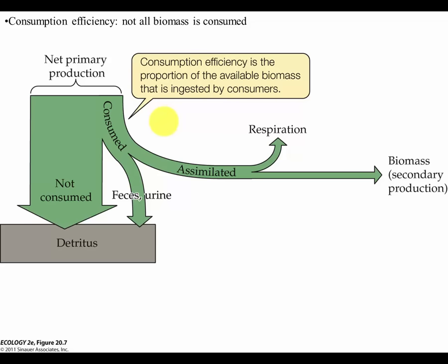Consumption efficiency is very strongly related to the accessibility of biomass. The most striking example is terrestrial plants — when you look at a tree, mostly what you're looking at is wood, and wood is inedible. So even though a tree represents a tremendous amount of biomass costing a huge amount of energy, very little of that energy will ever be passed on to any other organism. Wood that most terrestrial plants are heavily made of is, energetically speaking, a dead end.